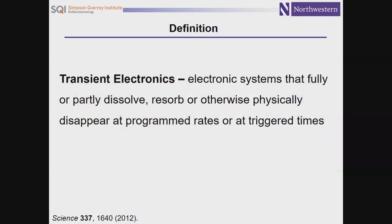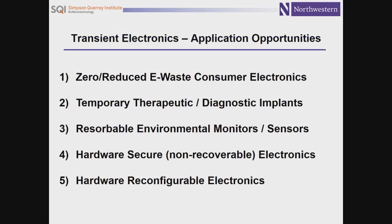The material science challenge is in defining function that's relevant, but in materials that ultimately degrade and disappear without a trace in the body — to eliminate what would be unnecessary device load and risk to the patient for the device to persist beyond its useful lifetime. This defines a new area of electronics, quite different from traditional electronics which are designed to last forever: electronics designed to last only for a finite time period. We refer to that class as a transient electronic device — an electronic system that fully or partly dissolves, resorbs, or otherwise physically disappears at a programmed rate or triggered time, engineered into the system at the material level.